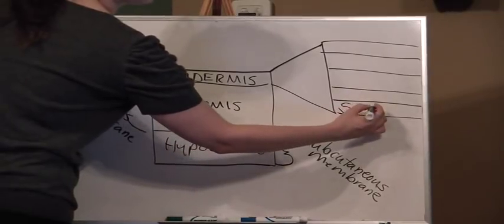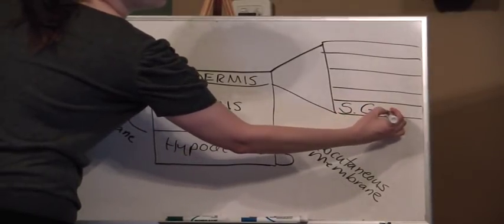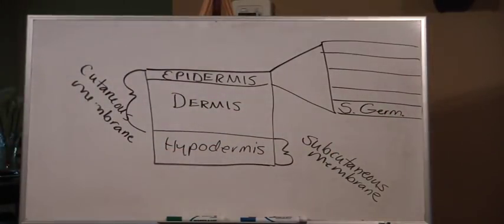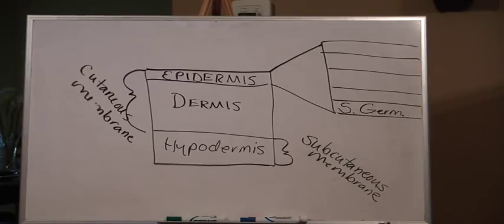Within the epidermis we have five layers of strata. Starting at the very bottom layer — the stratum germinativum. The word 'germ' here means reproductive, not bacteria. These are germinative cells that are constantly going through mitosis, dividing and making new cells. This makes sense because we are losing excessive amounts of skin every single day.